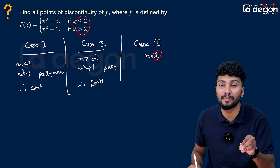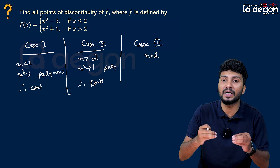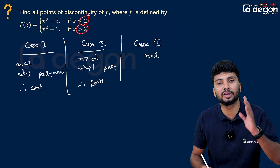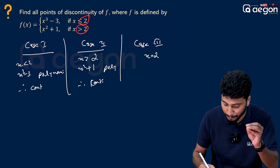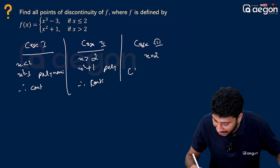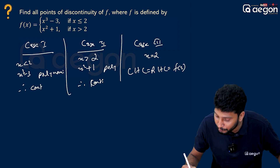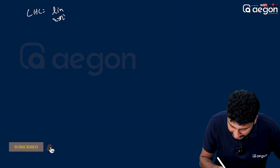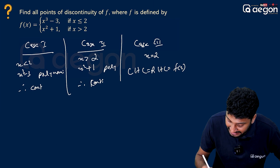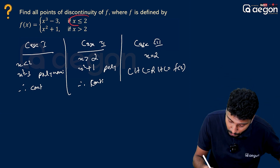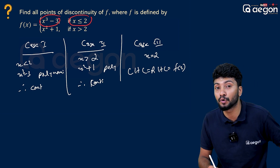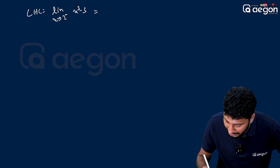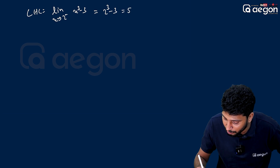For a piecewise function, at the joining point we must check continuity carefully. LHL is equal to limit as x tends to 2 minus of f(x). Since x is less than 2, the function is x³ minus 3. So the limit gives us 2³ minus 3, which is equal to 5.